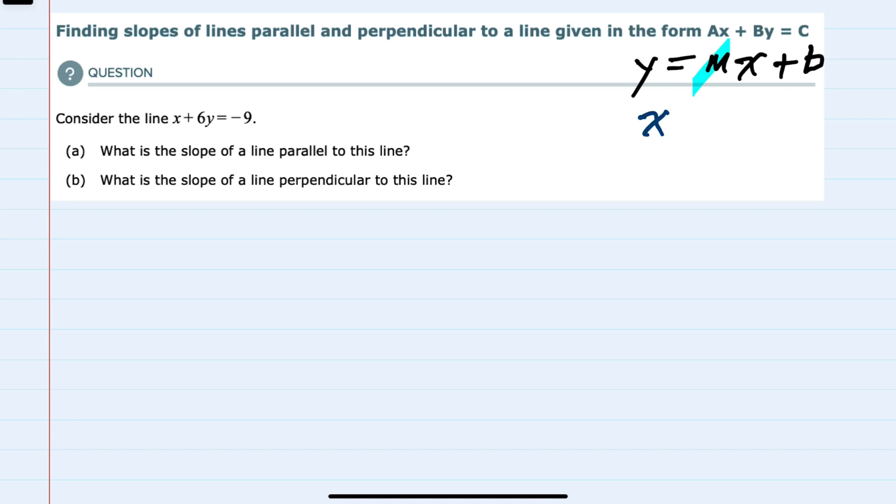So for this example, x plus 6y equals negative 9. To change this to slope intercept form, I'll solve for y by first subtracting the x term over to the other side, leaving me with 6y equals negative x minus 9.